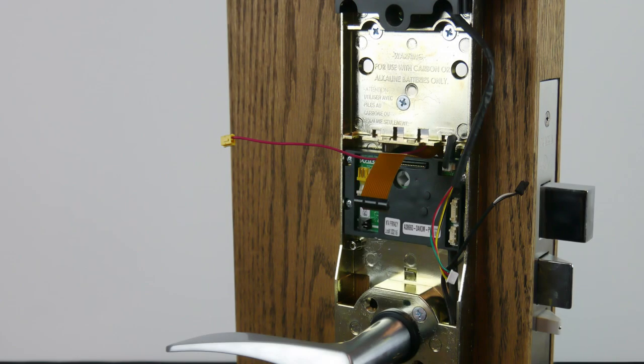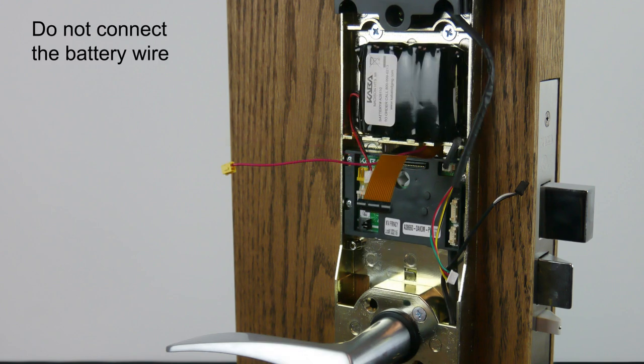Place the battery pack in the lock and route the battery wire through the lower left corner of the battery compartment.